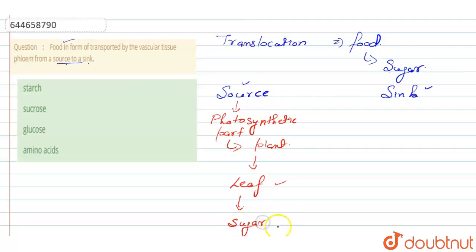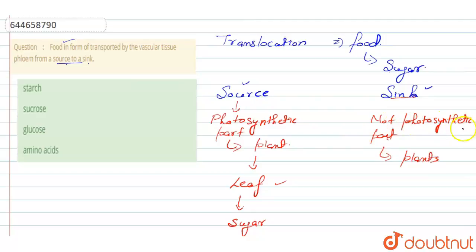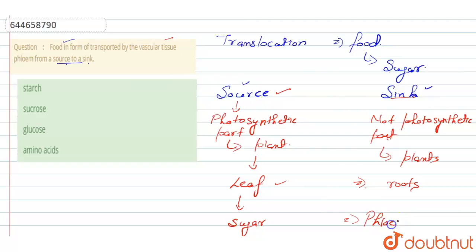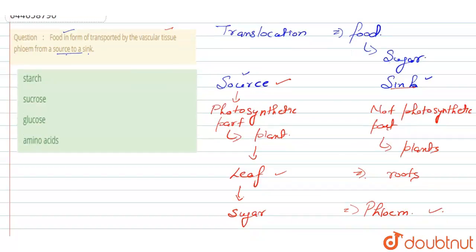The food which is consumed by the plant. The sink is the non-photosynthetic part of the plant where photosynthesis does not take place. Examples of such parts are the roots and stem. To translocate this food formed in the source to the sink, it is carried by the vascular tissue called phloem. Phloem is responsible for the translocation of food throughout the plant.